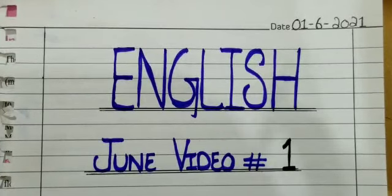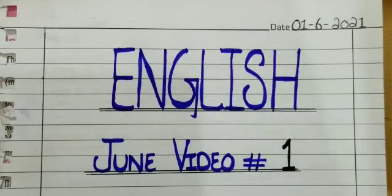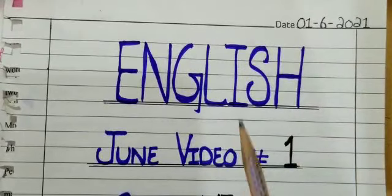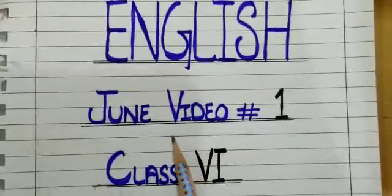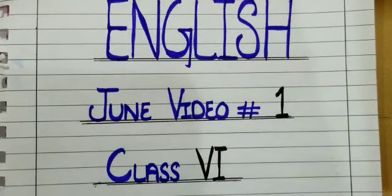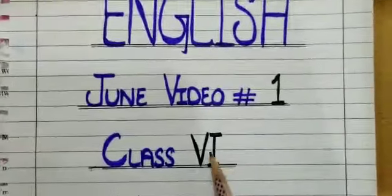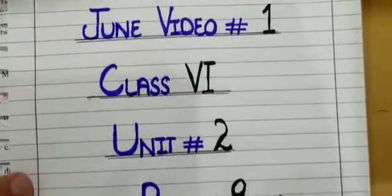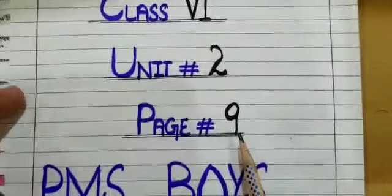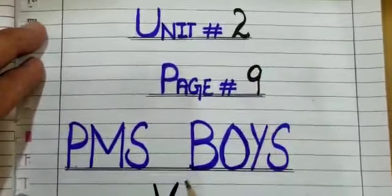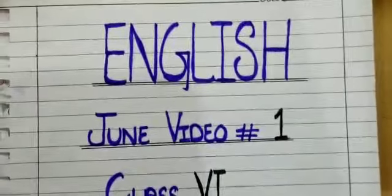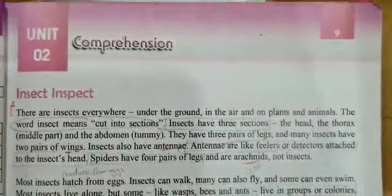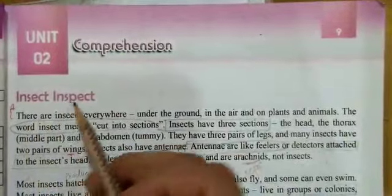Bismillah ar-rahman ar-rahim, Assalamu Alaikum everyone, I hope everyone is fine and doing well. Dear students, today is the first of June 2021 and this is your English class — the first video of the month of June. This is for Class Six. Today we are going to start Unit Number Two, Page Number Nine. Now open your books, page number nine, Unit Number Two — comprehension.